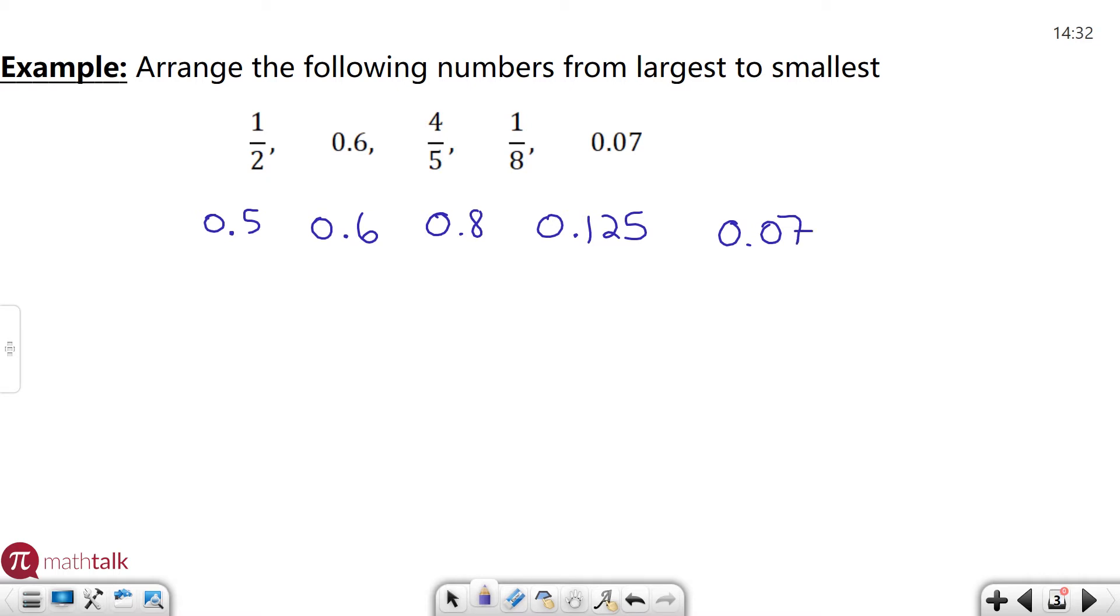Now these are all decimals. It's a little bit easier for me to see which one is the largest to smallest. So the largest of these is going to be 0.8. That's going to go first.